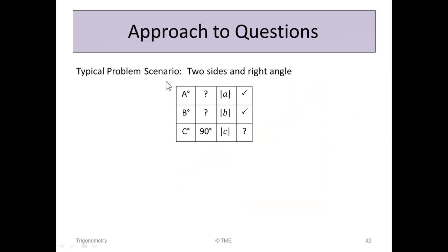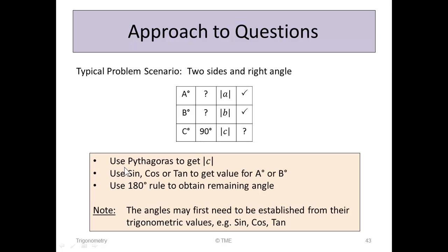Here's our approach to questions. A typical problem for a right-angled triangle gives you two side lengths and the right angle. If you know two sides, use Pythagoras to get the third side. You may use sine, cos, or tan to get angle A or B — for example, if you know the opposite and adjacent, use tan to find the angle. If you know two angles, use the 180-degree rule to obtain the remaining angle. Note that angles may first need to be established from their trigonometric values — the problem may give you sin B equals a value rather than the angle itself.